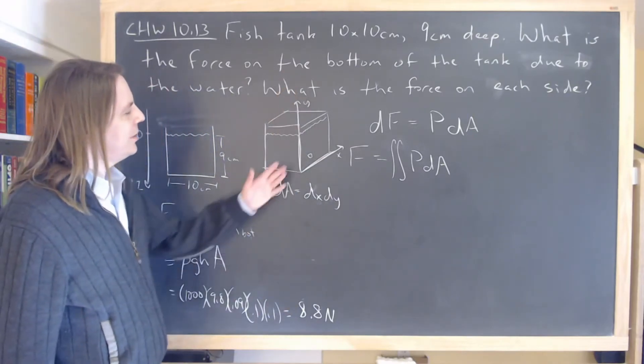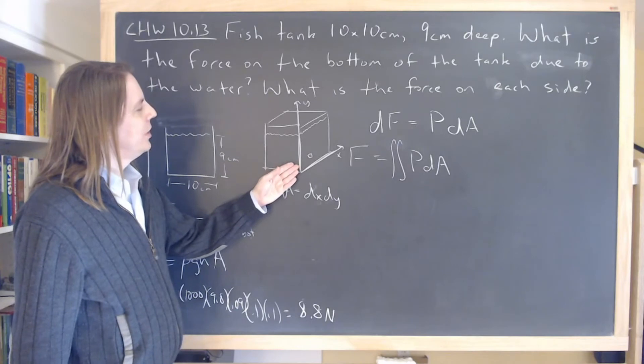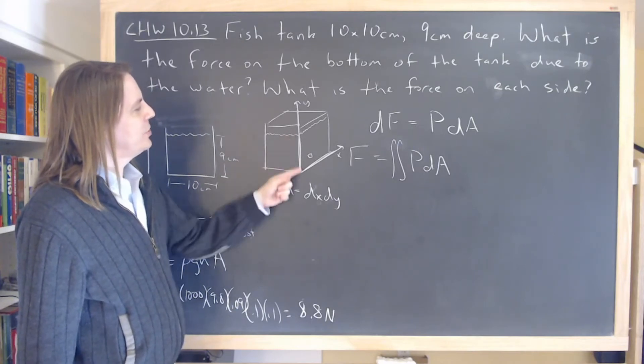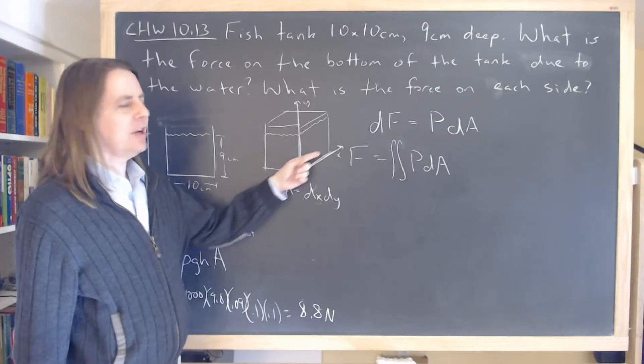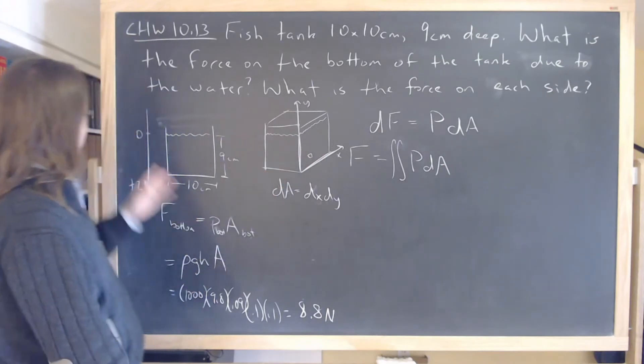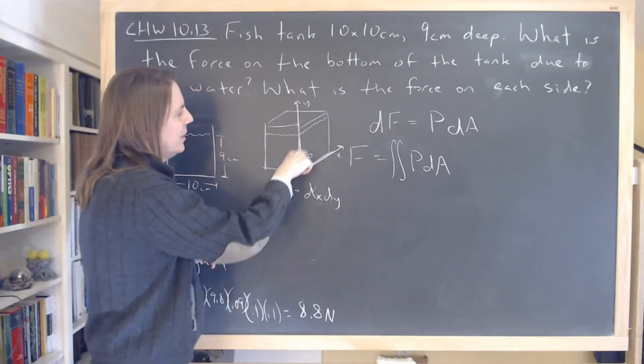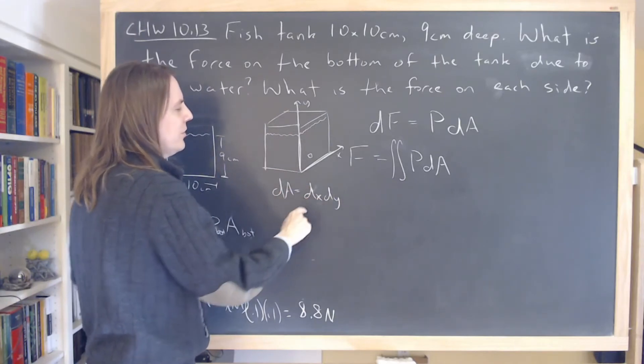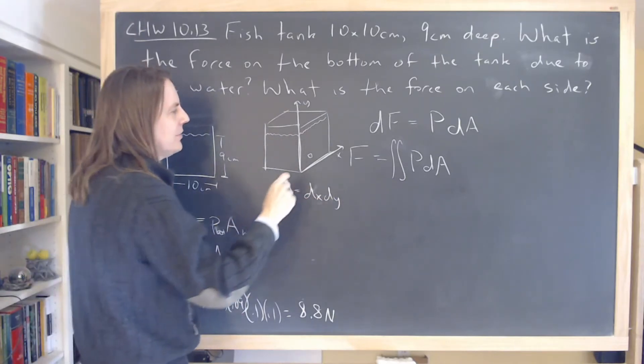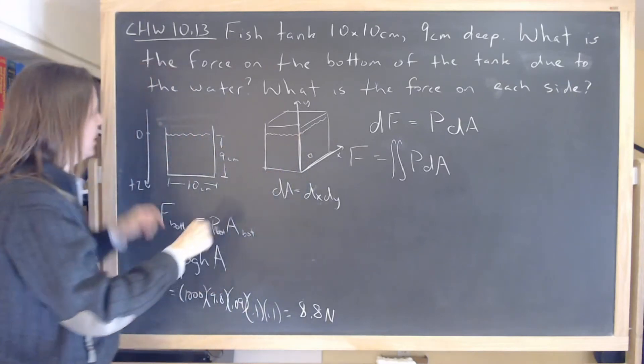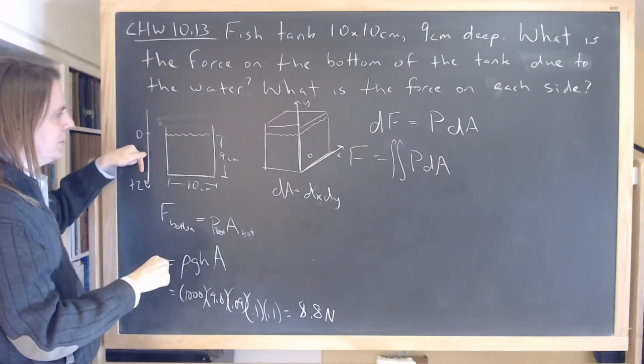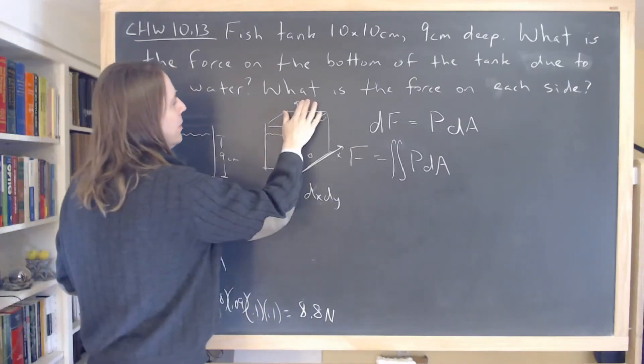But one thing that can help you out is to try to recognize how the pressure changes. Does it change with one direction and not the other? Okay. I've switched. This was really going to do it z down. Sorry. Anyway, so is the pressure constant with one of these directions? And you can see that it is, right? Because the pressure increases down. Here we go down with y.